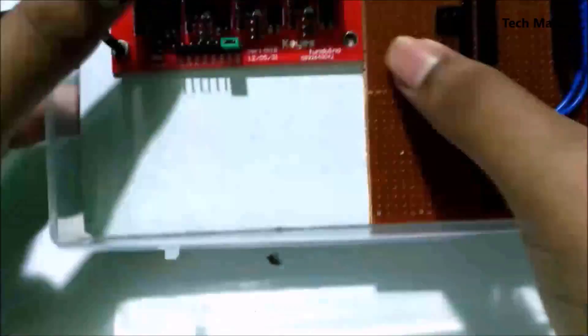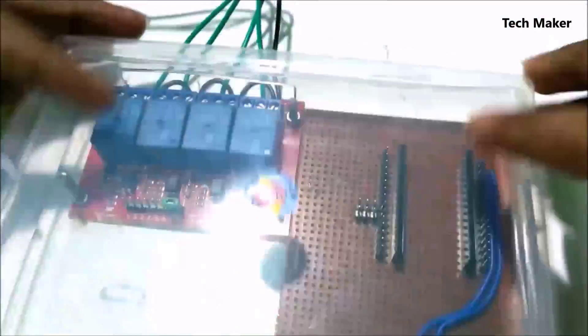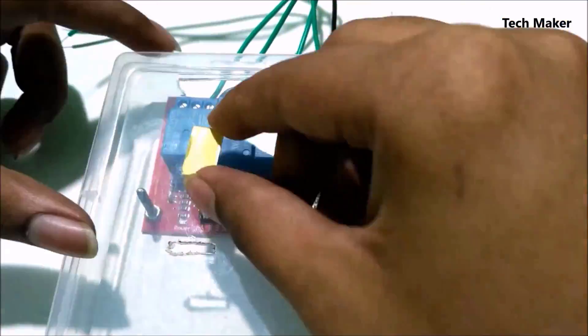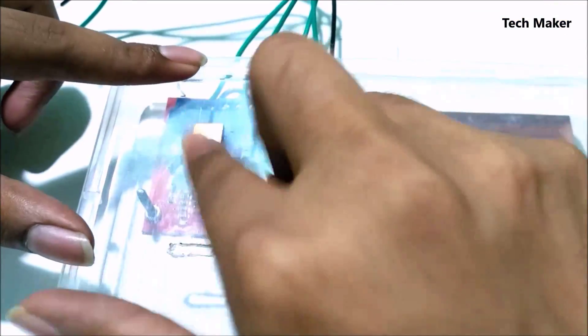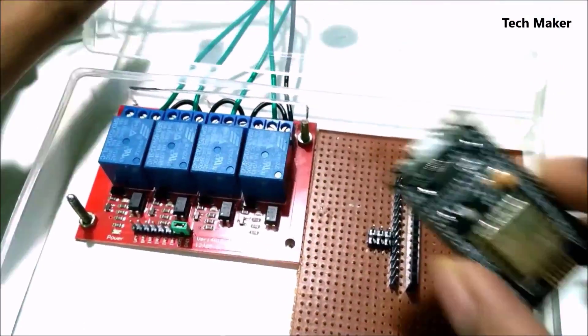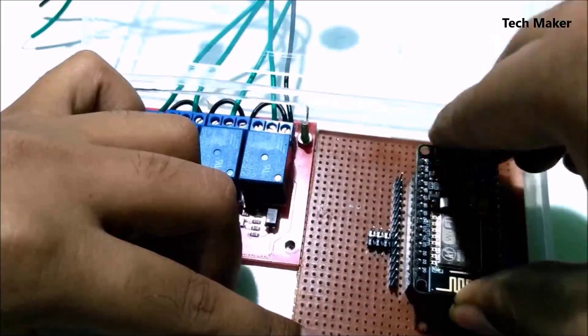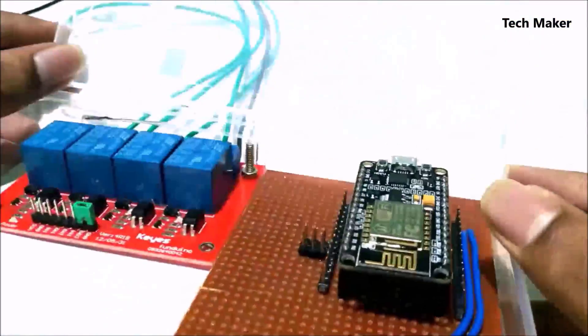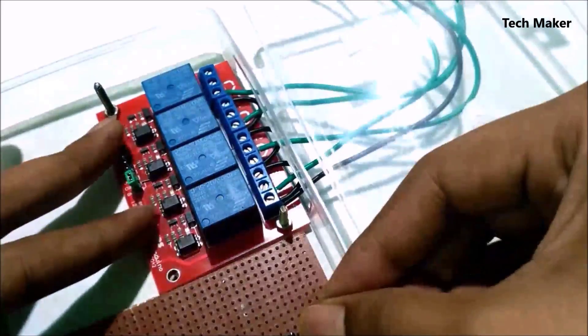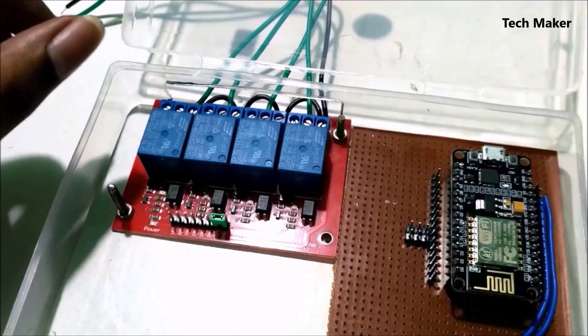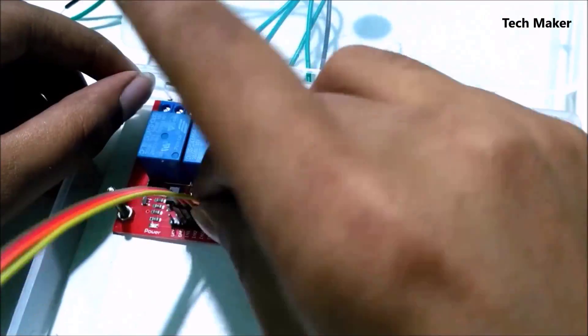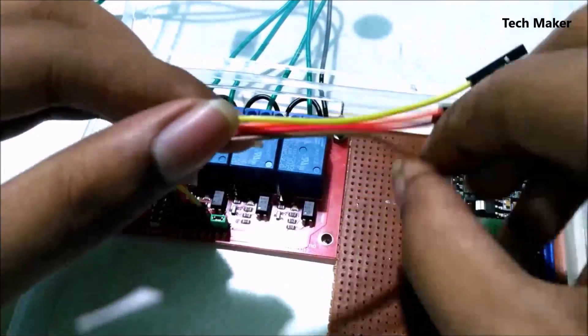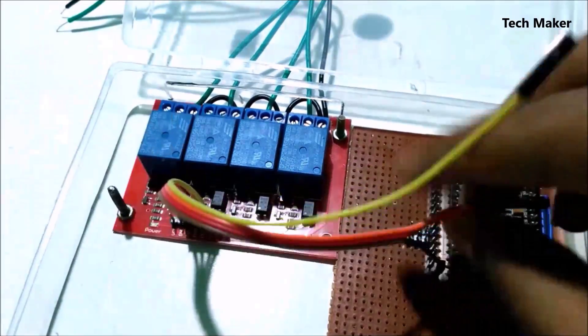Now place the perf board over there. Now apply the double-sided tape on the top of the box for fixing the DHT11 module. Now I am inserting the NodeMCU module. Fix it carefully. Now wire the relay module to the NodeMCU module as given in the circuit.